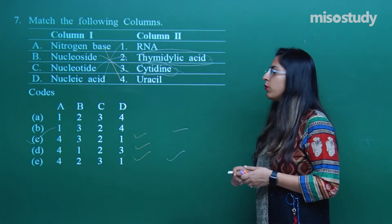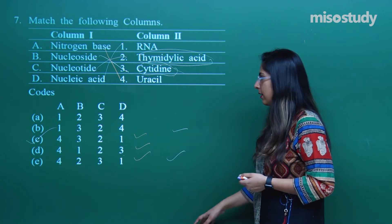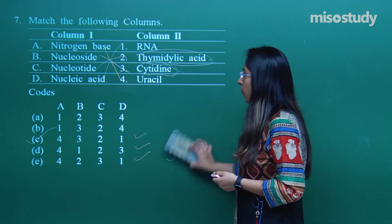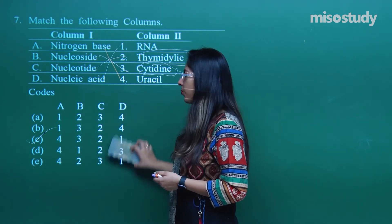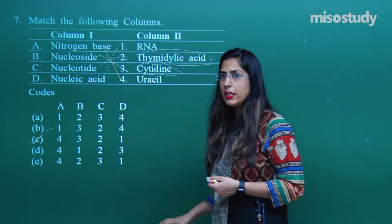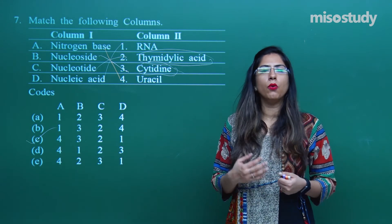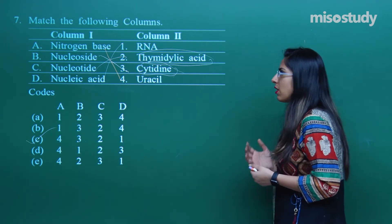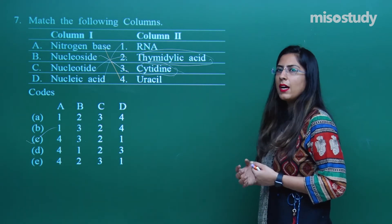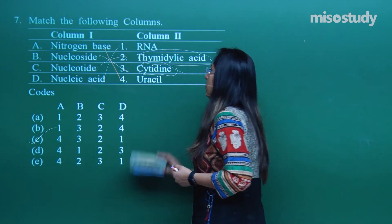The fifth option E was added just for practice — in normal NEET questions only four options are given. I included five options here for practice purposes.